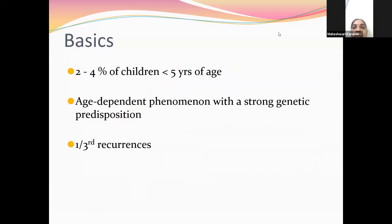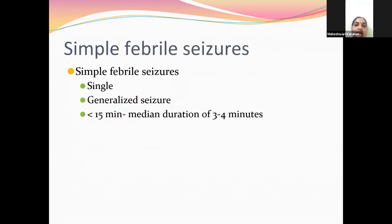Around two to four percent of children under five years are affected, though there are regional variations. One island called Mariana Island is more affected, as is Japan. In India the range is around five percent maximum. It is mainly an age-dependent phenomenon with strong genetic predisposition — most children have fever but not all have seizures. Around 30% of them have recurrences, and the younger the age group, the higher the chance of recurrence.